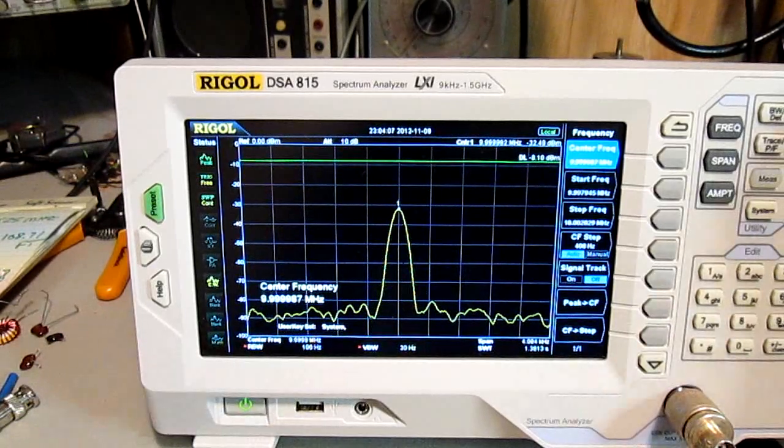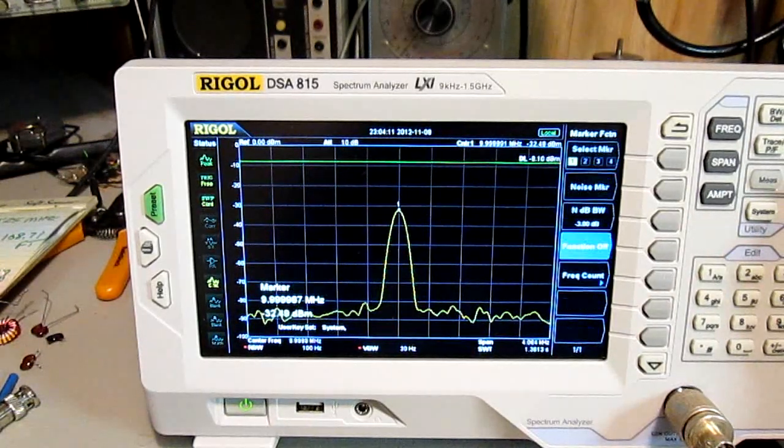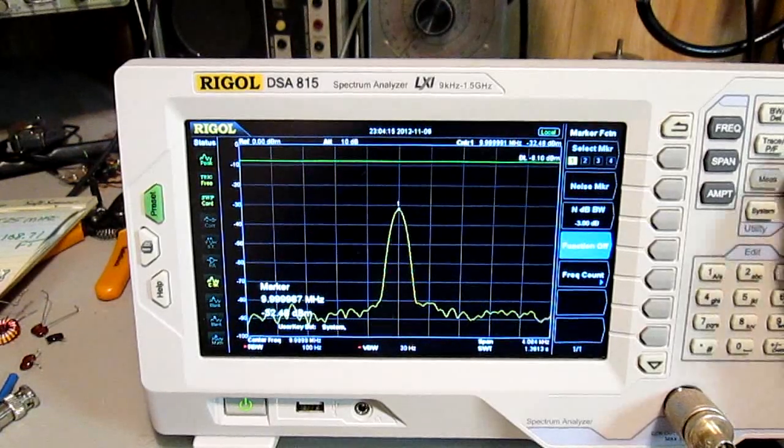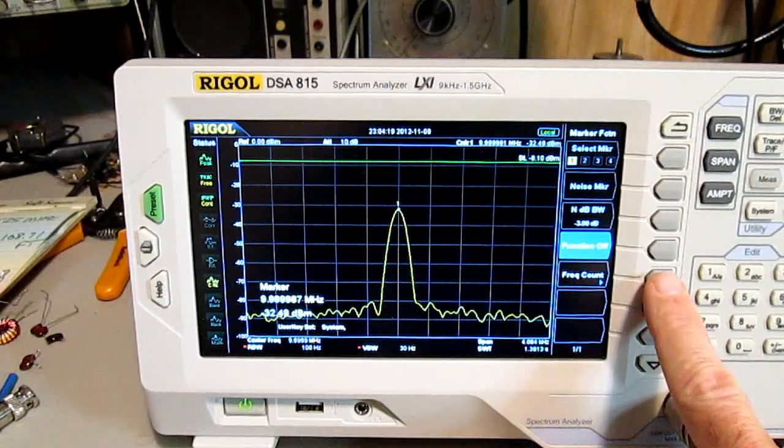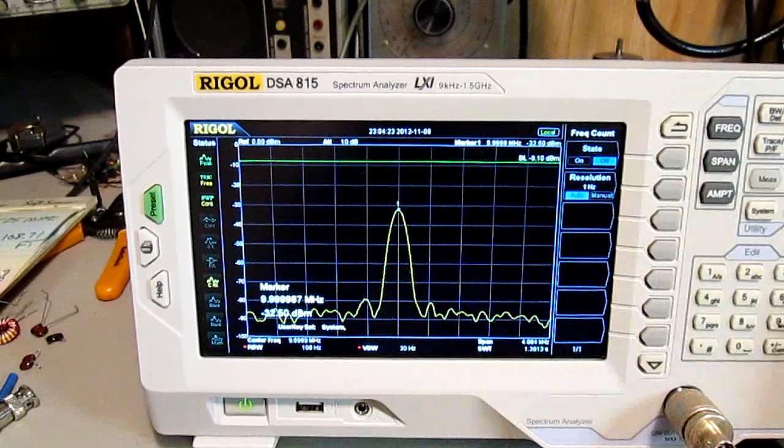But then I noticed if you go to under the marker menu, there is a button called marker function. If you press that, down here, there is one that is called frequency counter. And I thought, okay, let's give it a try. And actually, let me turn it off first.